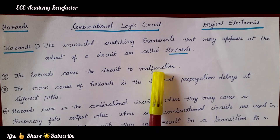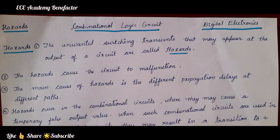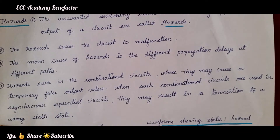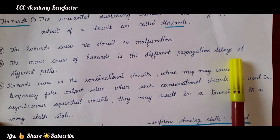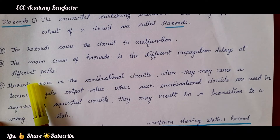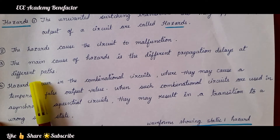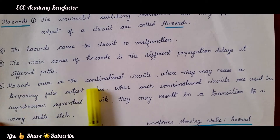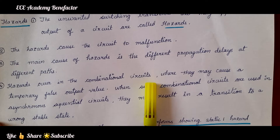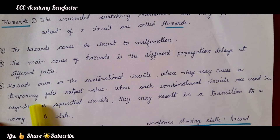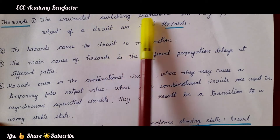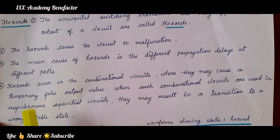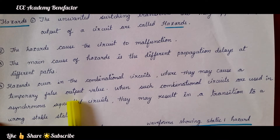Why do hazards occur? Due to unwanted switching transients. The main cause of hazards is different propagation delays at different paths. Hazards occur in combinational circuits where they may cause a temporary false output value.